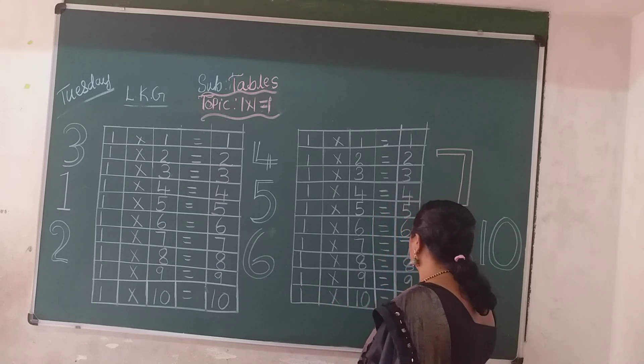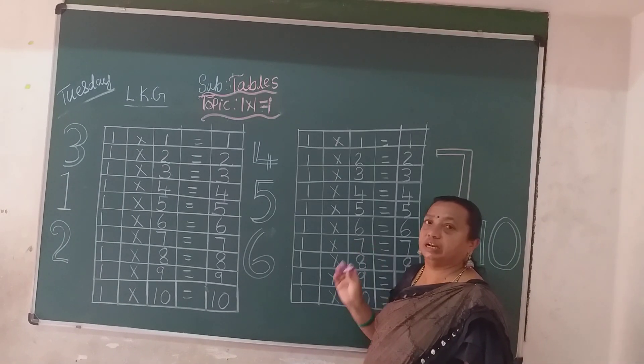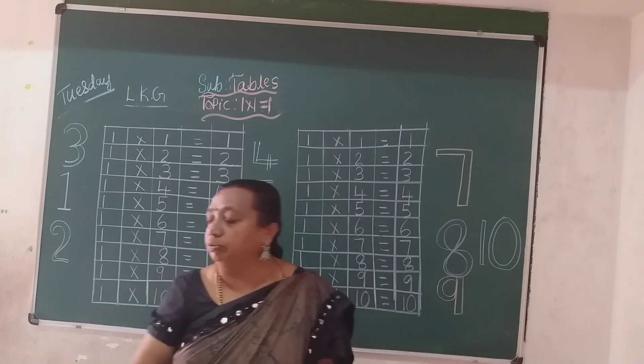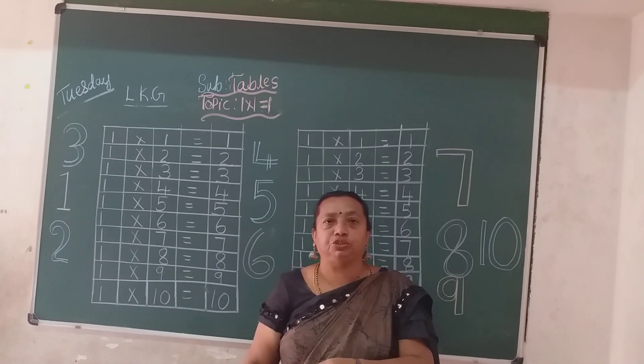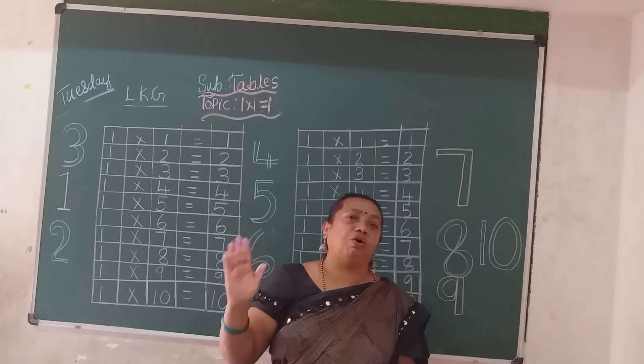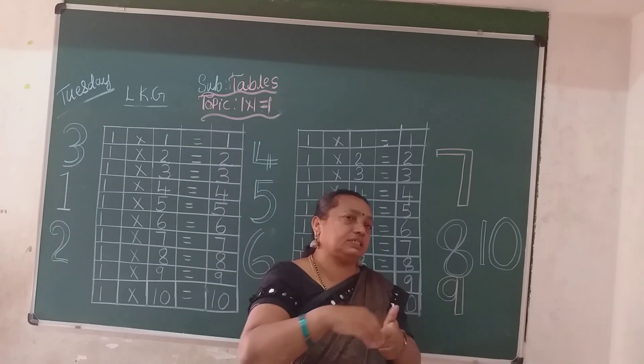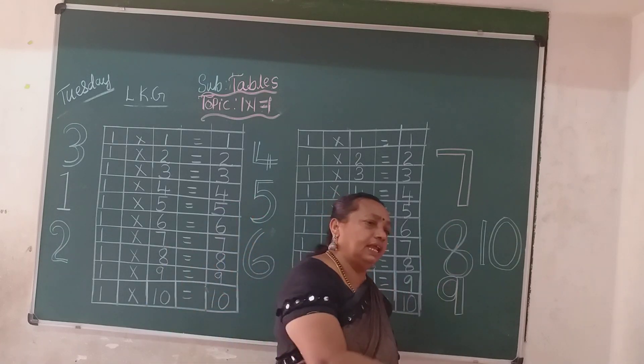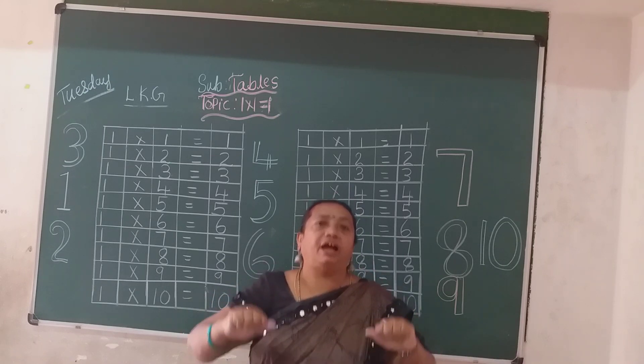One tens are ten. Okay children, in your writing you should say it while writing. Now I will teach you a number rhyme, children. Say: one-two, buckle my shoe. Three-four, shut the door. Five-six, pick up sticks. Seven-eight, lay them straight. Nine-ten, a big fat hen.